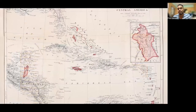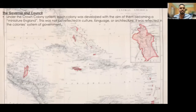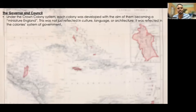Before you here is a map, and as you see highlighted in the red-pink areas, these are the territories that belong to England in the West Indies — what became known as the British West Indies. Under the crown colony system, each colony was developed with the aim of becoming something like a miniature England. This was reflected not just in culture, language, or architecture, but in the colony system of government.